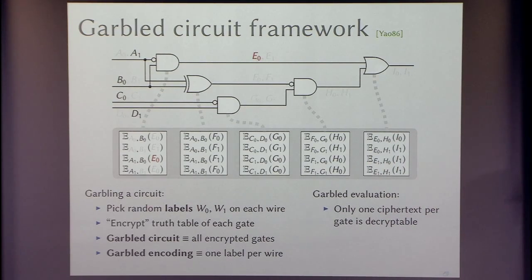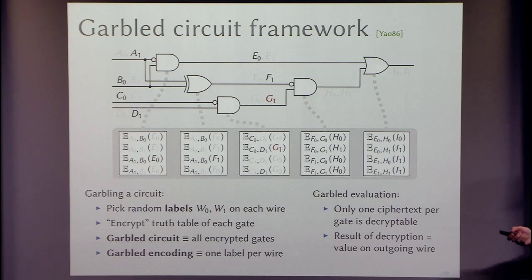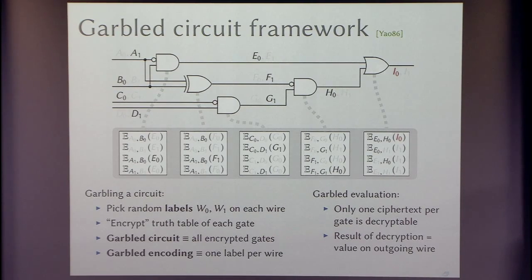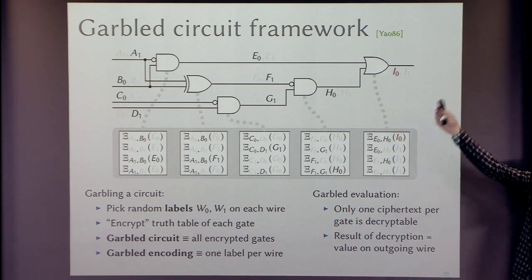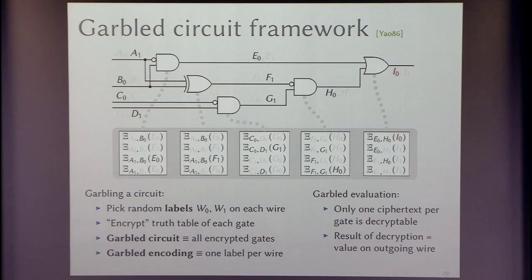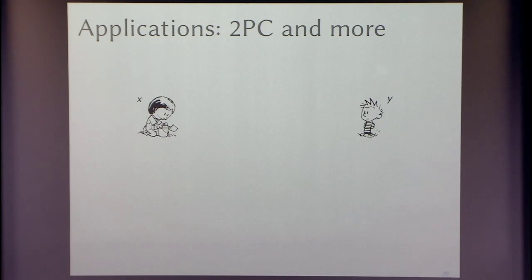We go through and eventually get a garbled encoding of the output — false in this case. That's the baseline, classical Yao's garbled circuit construction. We love garbled circuits, the classical application of which is secure two-party computation. Alice and Bob have their private inputs, and Alice can generate a garbled circuit.